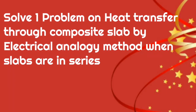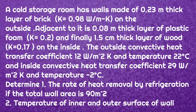We will solve a problem on heat transfer from a composite slab using the electrical analogy method when the slabs are in series. A cold storage room has walls made of a 0.23 meter thick layer of brick with K = 0.98 W/mK on the outside, adjacent to a 0.08 meter thick layer of plastic foam with K = 0.2, and finally a 1.5 cm thick layer of wood with K = 0.17 on the inside.